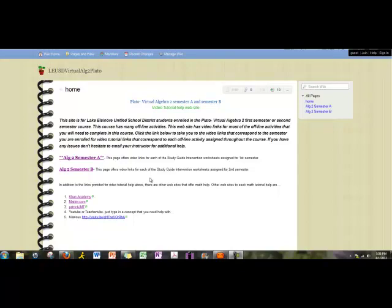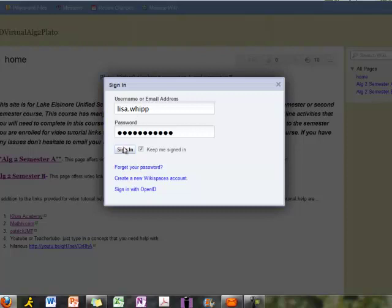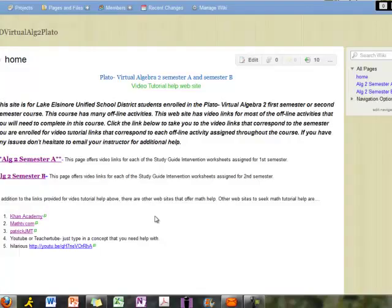Once you get an account and you get a password and all that good stuff, let me know and then I will invite you to join this particular wiki. So once you've got that all set up, then you just make sure you sign in in the top right hand corner. There's a sign in button, and use your password that you signed up with from wikispaces.com. Sign in and then you can edit.